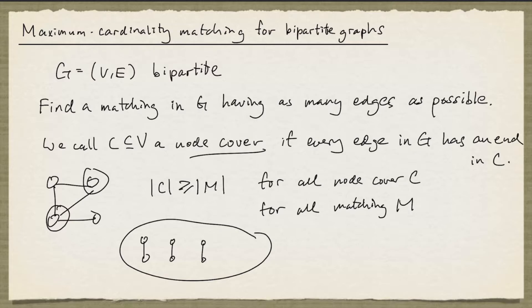Now because no two edges share the same end, every node cover must have at least one node from each matching edge. And so the number of nodes in a node cover must be at least the cardinality of a matching in G.